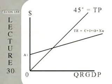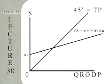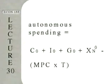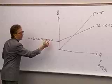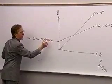This is autonomous spending, A1. We're very interested in that autonomous spending because it equals autonomous consumption plus investment plus government spending plus net exports minus MPC times taxes. These are personal taxes we're talking about — that's what A1 is.